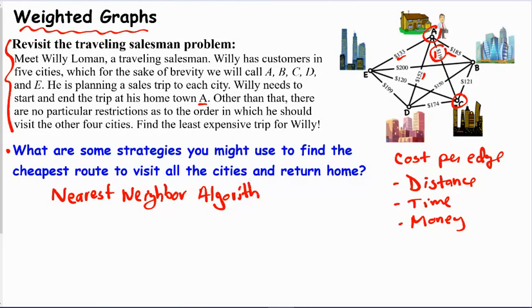And that's where you choose the cheapest travel expense from the city you're currently at. So we were at A, and the cheapest was to go to C. And then once you're at C, you say, well, which is the cheapest connected to C? And we see 120 is. So we would go to E next, and so on and so forth. And we'll solve this by nearest neighbor in the following slide.